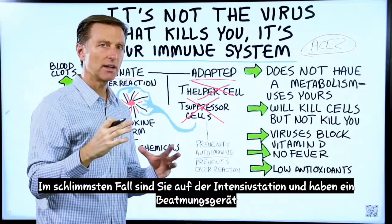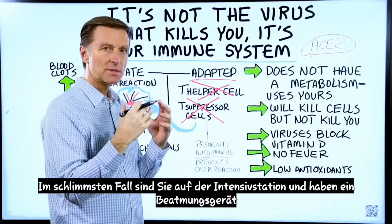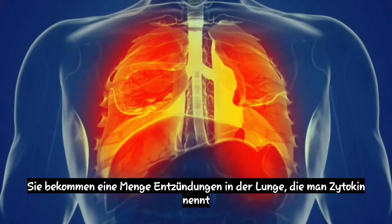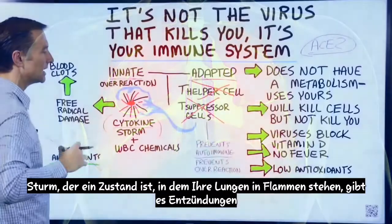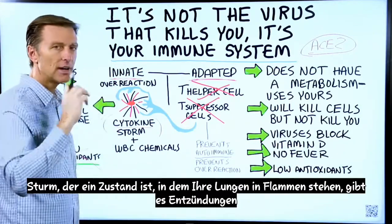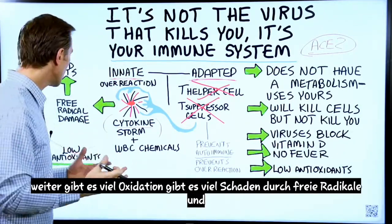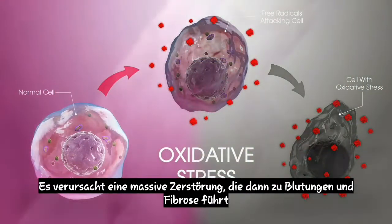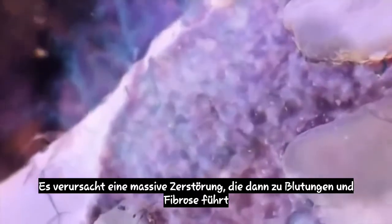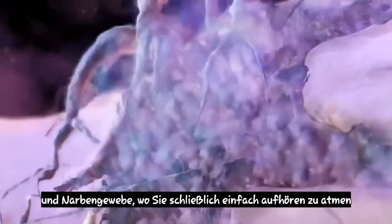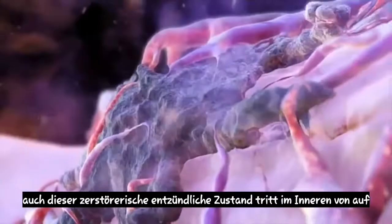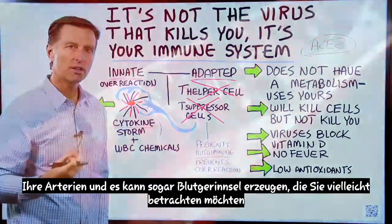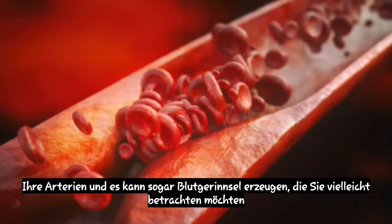In a worst-case scenario, you're in intensive care on a respirator with a lot of inflammation going on in the lung. It's called a cytokine storm — a condition where your lungs are on fire. There's inflammation, a lot of oxidation, and a lot of free radical damage, creating massive destruction which then causes bleeding, fibrosis, and scar tissue where you eventually stop breathing. Also, this destructive inflammatory condition is happening on the inside of your arteries and can even create blood clots.